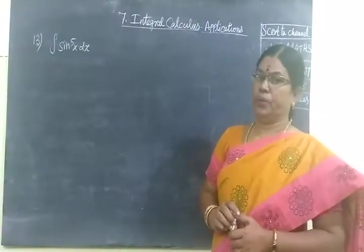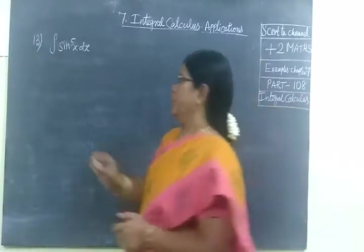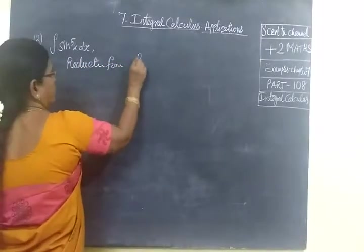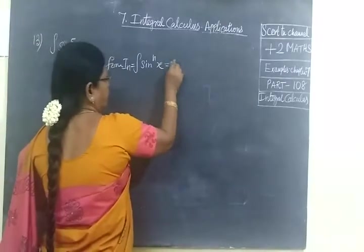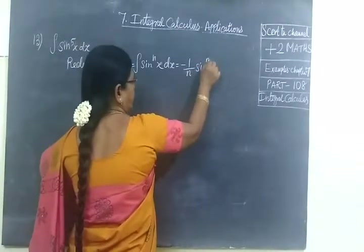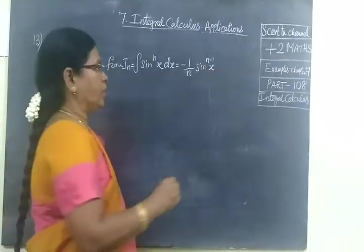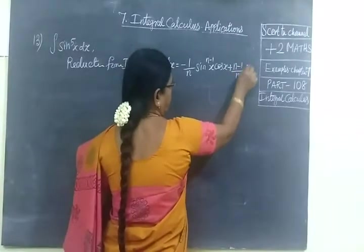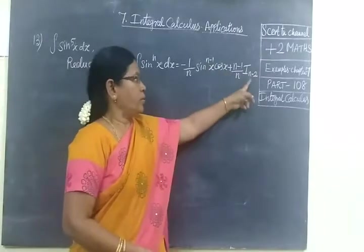Reduction formula for integral sine power nx. We are writing this as I_n equal to minus 1 by n sin power n-1 x cos x. This is the reduction formula. Plus n-1 by n I_{n-2}. In the last, I_{n-2}.